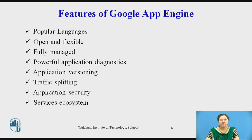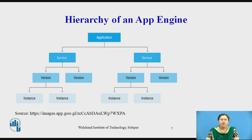Application security provides a safeguard to your application by defining access rules with the App Engine firewall by default on your custom domain at no additional cost. The last feature is the services ecosystem — you can tap a growing ecosystem of Google Cloud services from your app, including an excellent suite of cloud developer tools.